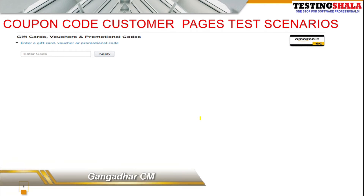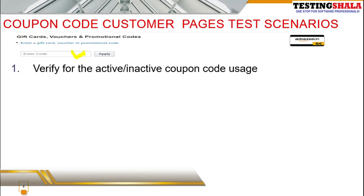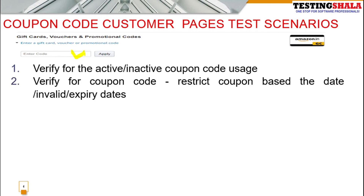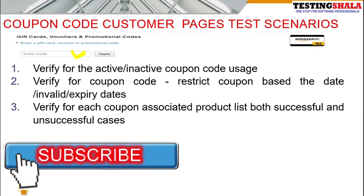From the customer point of view, the first thing to validate is whether the coupon is active or inactive. If it is an active coupon, you should get a discount. If it is inactive, you should get an error message saying it is an inactive coupon. You should also verify any restriction based on a particular date or expiry date. Additionally, there are certain coupons that can only be used for a particular category of products and not for others — that kind of validation should also be covered.